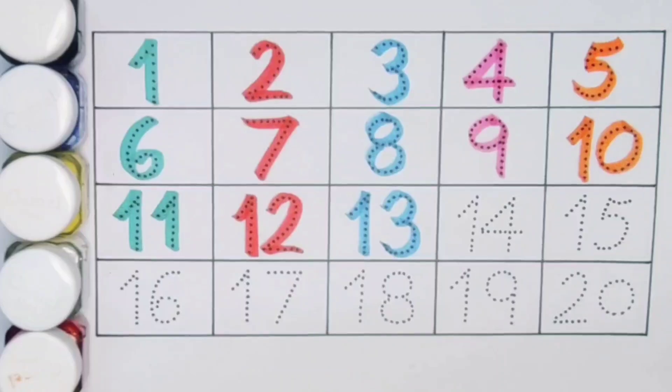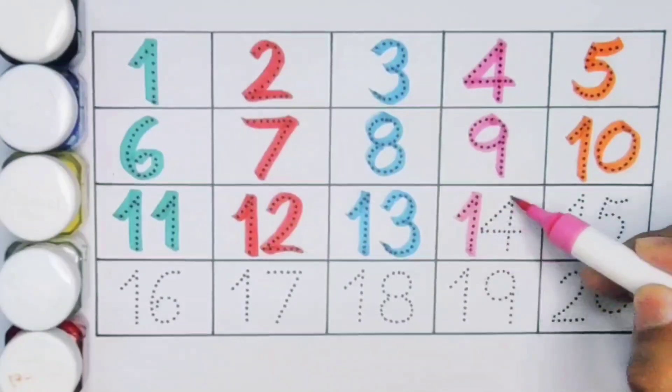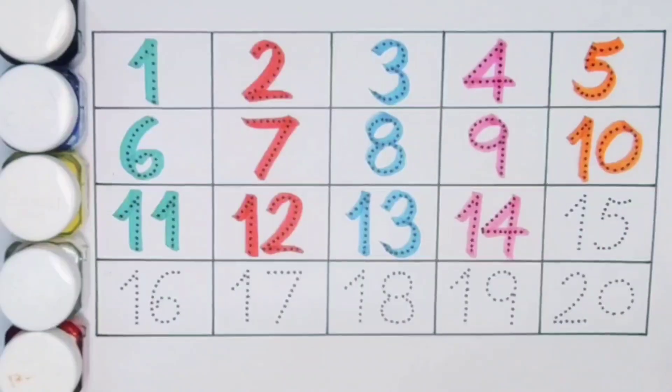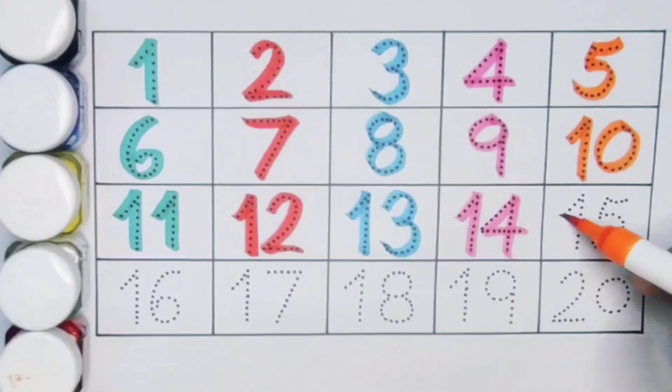Next kids 14, 1, 4, 14. Number 14. Next kids 15, 1, 5, 15.